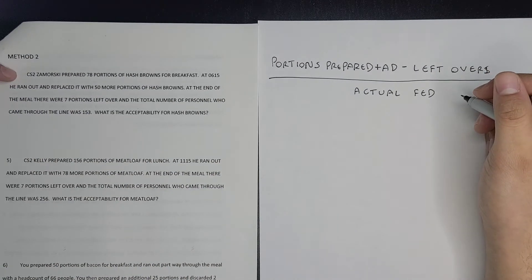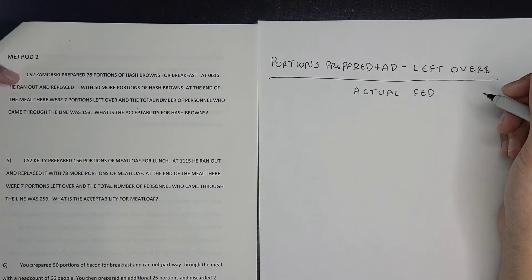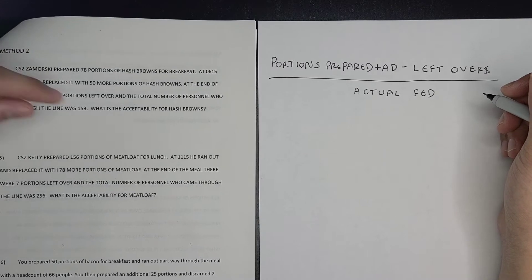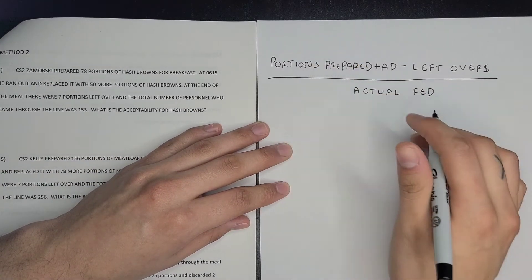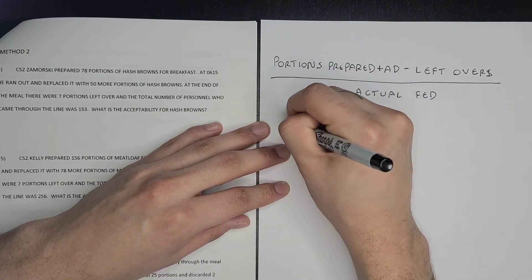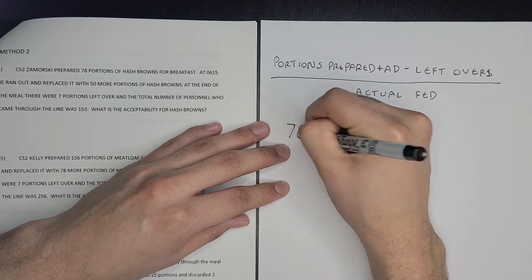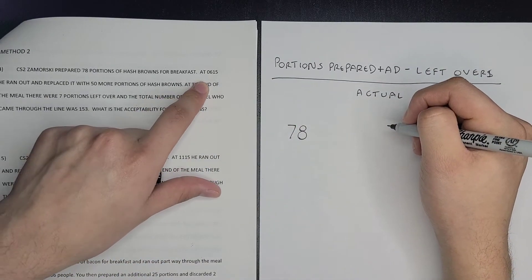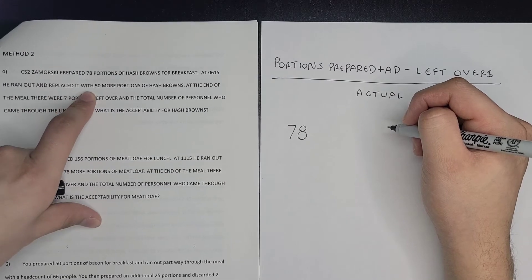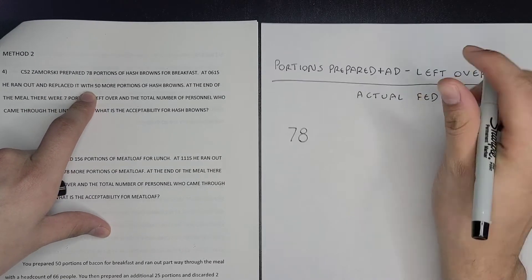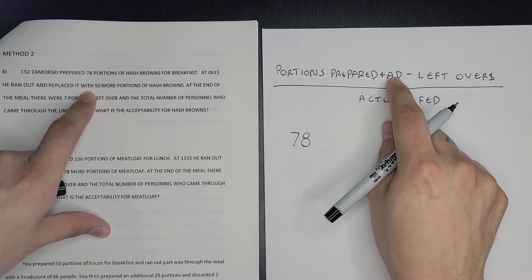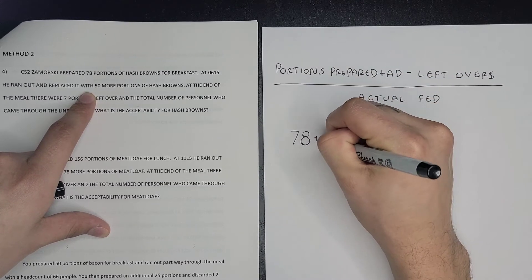So this first problem states CS2 Zamorski prepared 78 portions of hash browns for breakfast. So your portions prepared were 78. At 0615 he ran out and replaced it with 50 more portions of hash browns. So that'd be plus 50, that would be your additional.